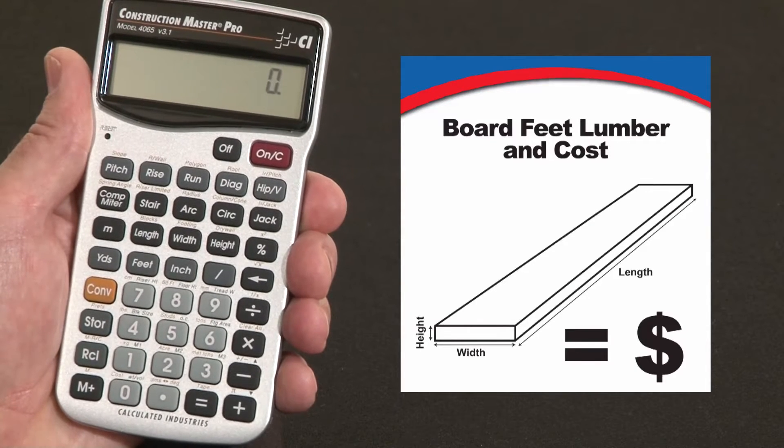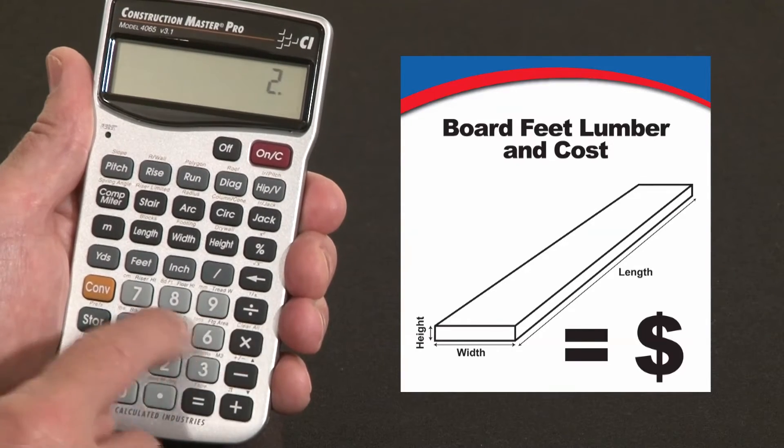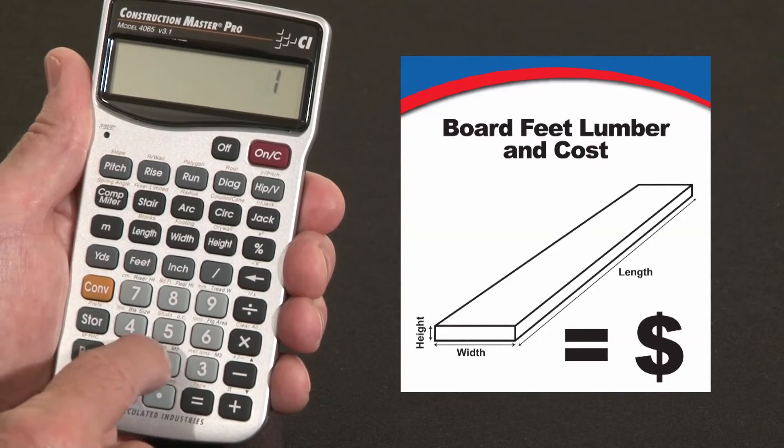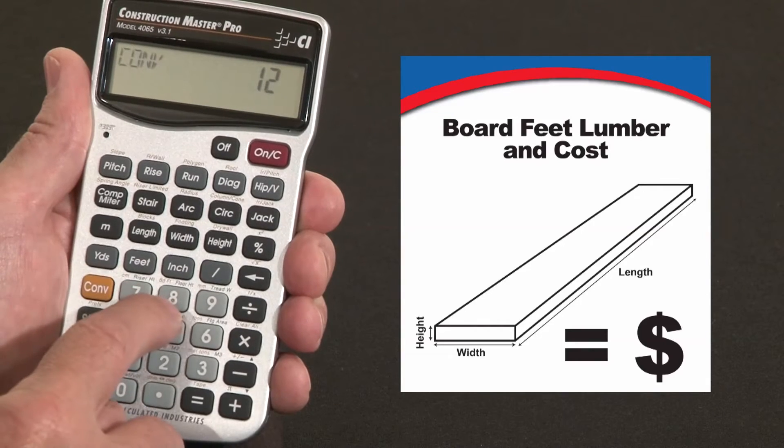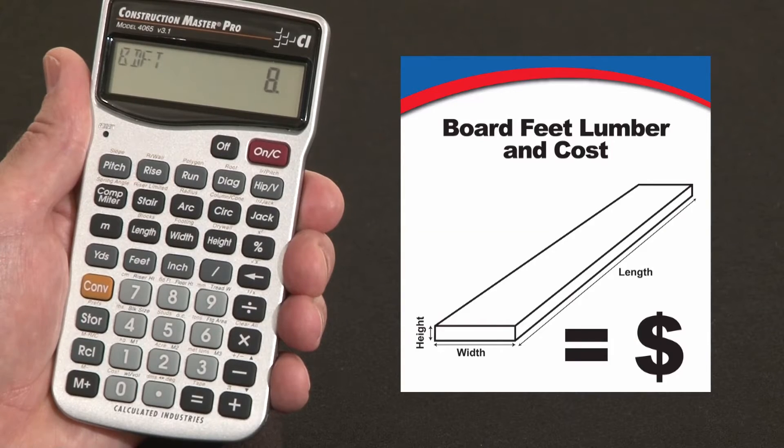Say we need our lumber list shows 20 pieces of 2x4x12. The way I'd enter that is 2x4x12, convert, and over the 8 key it says board feet, the second function. So 2x4x12 is 8 board feet.